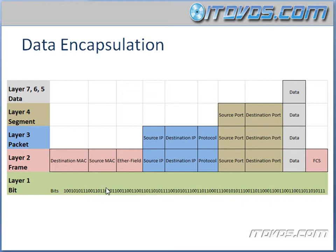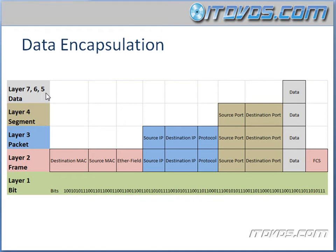This frame is then turned into bits and transferred over whatever medium we're using, like an Ethernet cable. Once it reaches its destination, it gets decapsulated. Layer 2 takes the bits and turns them into a frame. At layer 3, the frame header and FCS are stripped off and it becomes a packet, which is handed to the proper protocol at layer 4. The layer 3 header is stripped off and it becomes a segment. Then the segment header is stripped off and it gets handed back up to layer 5 as just data — completely decapsulated. This process repeats over and over as we send and receive data over the internet or our network.